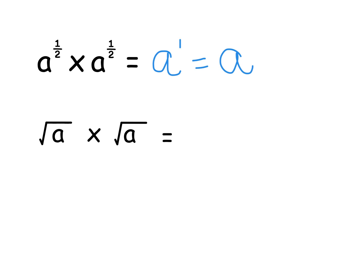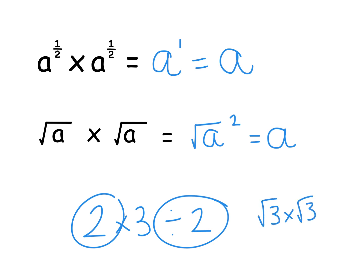Now, root a times root a is a wee bit like writing root a all squared. The square root and squaring are the inverses of each other, so they cancel out. It's a wee bit like me telling you to do two times three and then to divide it by two. These cancel each other out. So the square root and the square cancel each other out and just becomes a.